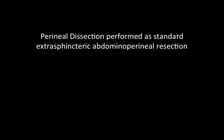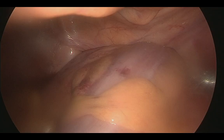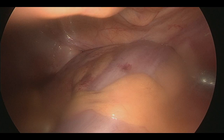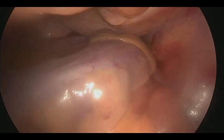The resection is completed by external dissection of the perineum in the caudocranial direction. This is not shown for privacy purposes. A few seconds of the perineal dissection as seen on laparoscopic view are shown here. The specimen is extracted through the perineal wound.